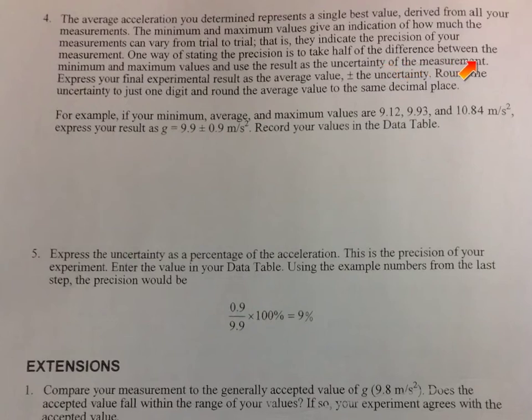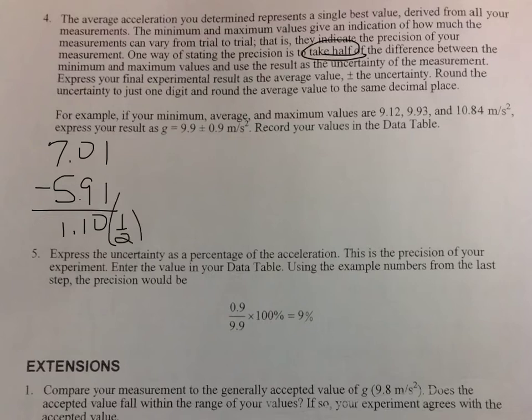So if you remember, my minimum was 5.91. Difference means subtraction, so I'm going to subtract that from my max, which was 7.01. When I subtract that, I get 1.10. And it says take half of the difference. So I'm going to take half of that, and that gives me 0.55.